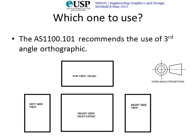In third angle orthographic projection, this is the orientation: top view on top, just below the top view you have the front view, the left side view on the left side, and the right side view on the right side. Do not miss the symbol which indicates which angle of projection you are using.